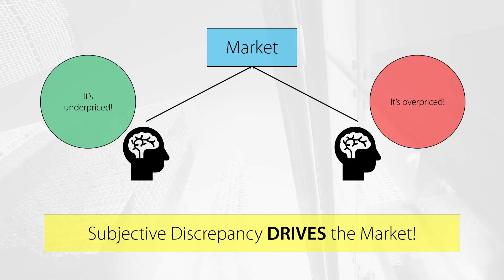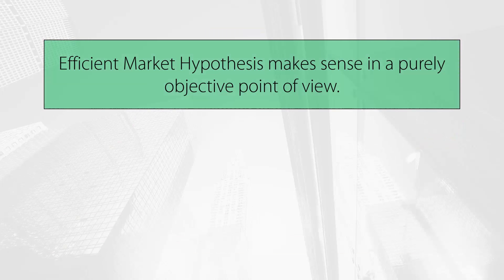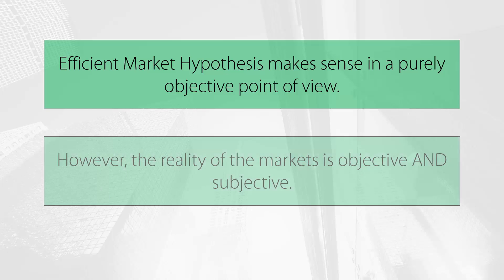However, if we look at the efficient market hypothesis from a completely objective point of view, it makes sense because nominal price is always reflecting the current equilibrium between buyers and sellers. The essential point here is to understand that our perception of the markets is bidimensional. In other words, we have the nominal price, which is the objective dimension of the market, and we have the individual interpretation of value of this nominal price, which is the subjective dimension of the market.